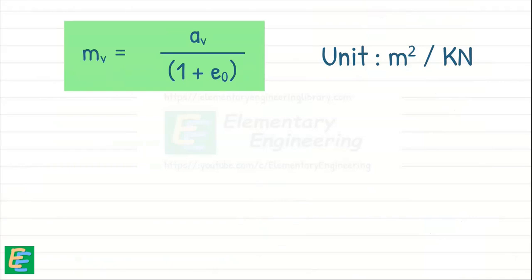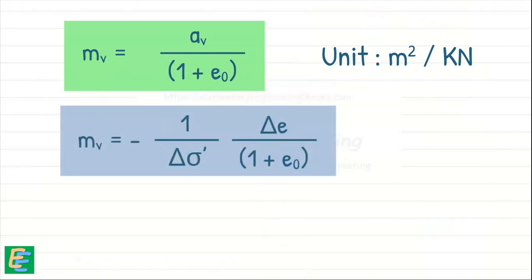Like coefficient of compressibility AV, the coefficient of volume change or volume compressibility MV depends on the effective stress at which it is determined. Its value decreases as the effective stress increases.